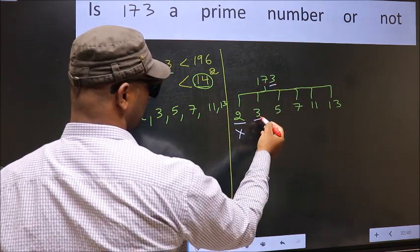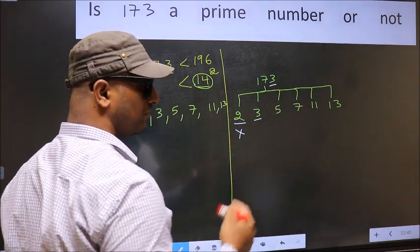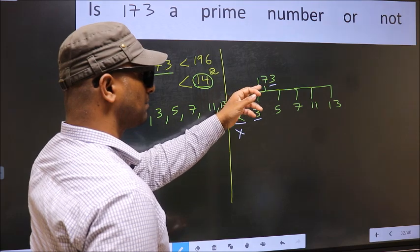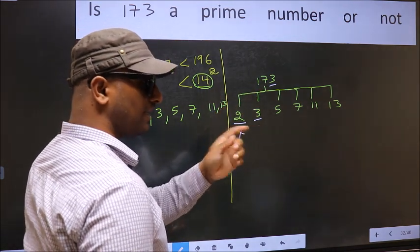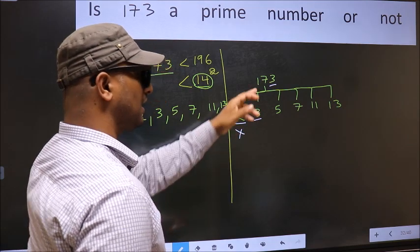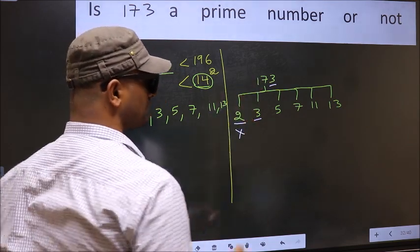Next, number 3. To check divisibility by 3, add the digits. 1 plus 7 plus 3, we get 11. And 11 is not divisible by 3. So, this number is also not divisible by 3.